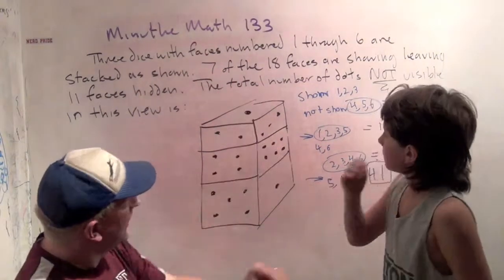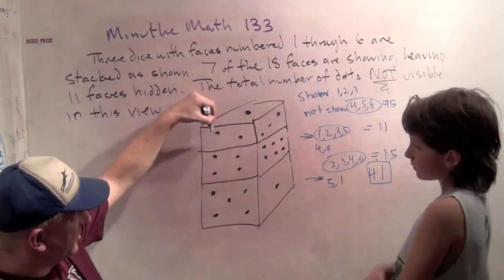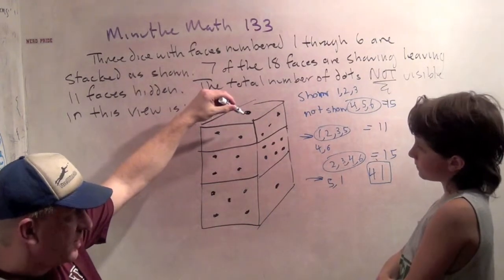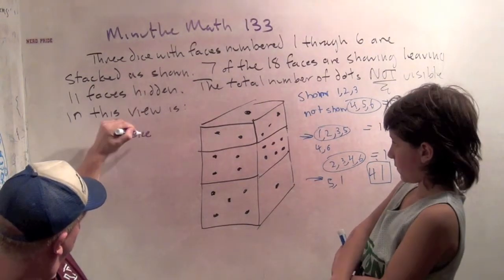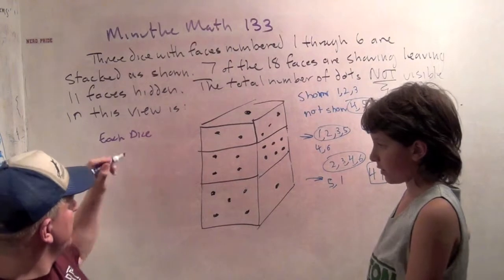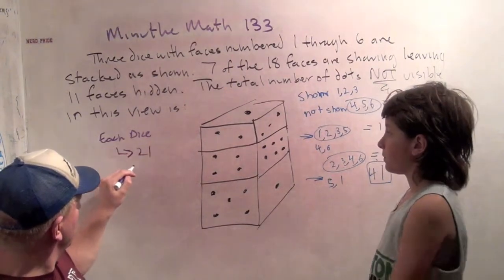Alright, that's the right answer. Good job. Let me show you a different way you could have done it. Each die has the numbers 1, 2, 3, 4, 5, 6. So how many dots are in each die? Well, 1 plus 2 plus 3 plus 4 plus 5 plus 6 is 21 for each die. So there's 63 dots total.